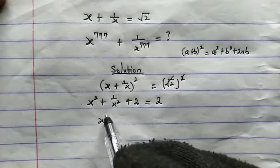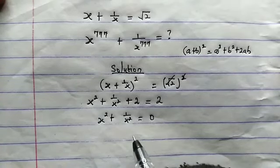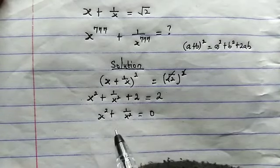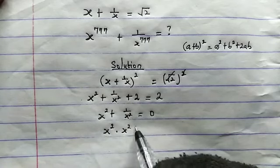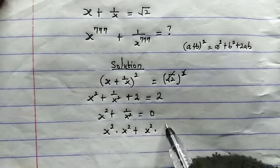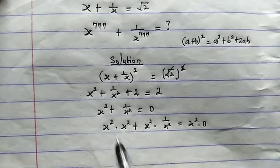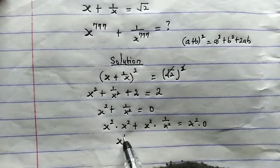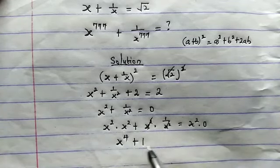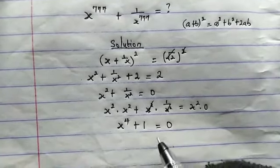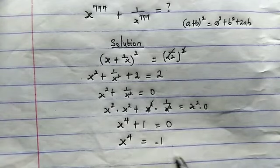Subtracting 2 from both sides, we get x squared plus 1 over x squared equals 0. Now let's multiply each term on both sides by x squared. So x squared times x squared plus x squared times 1 over x squared equals x squared times 0. That gives us x to the power of 4 plus 1 equals 0. Subtracting 1 from both sides, we get x to the power of 4 equals negative 1.